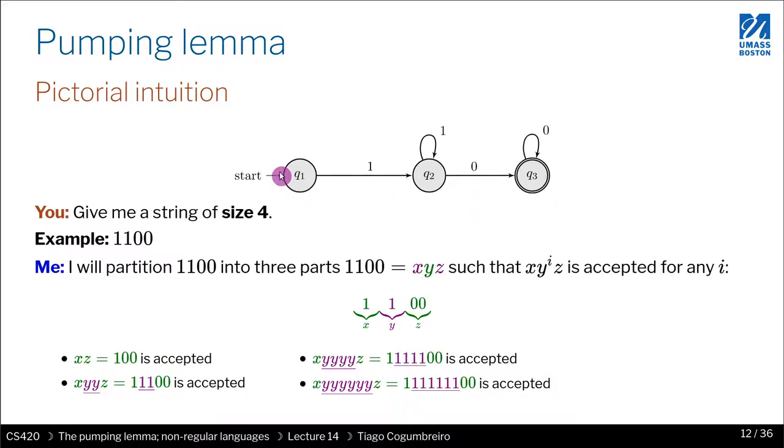Let's say you gave me another string, a string of size four. So now you went once here and then twice here, so you cover two loops. I could divide it in such a way where now x is just the first one and then the loop that I'm picking is q2.